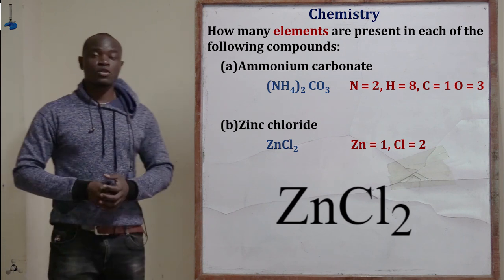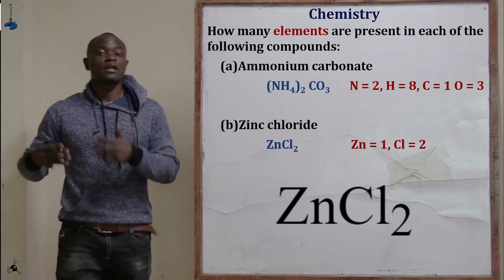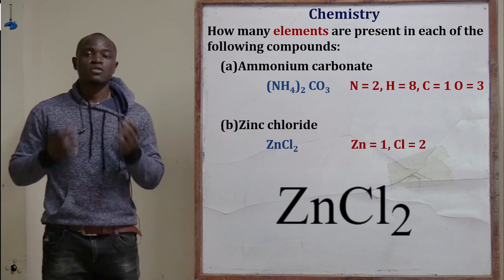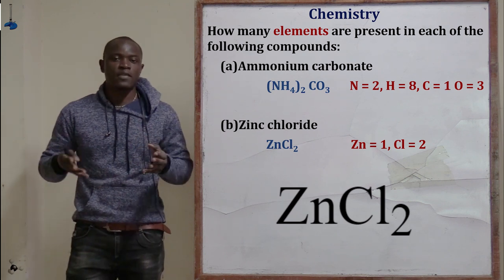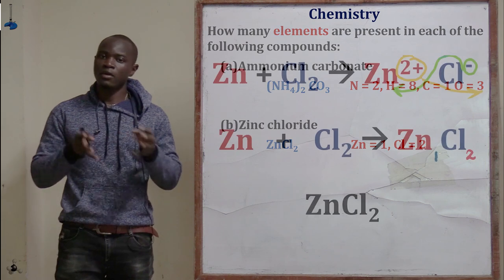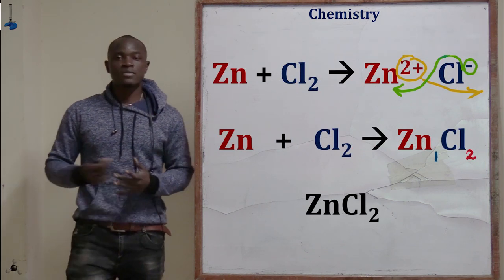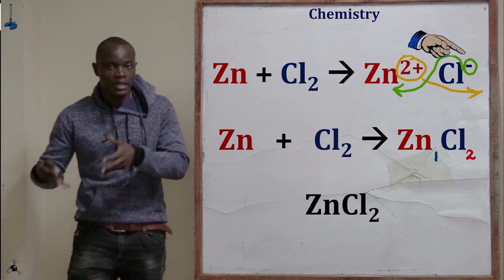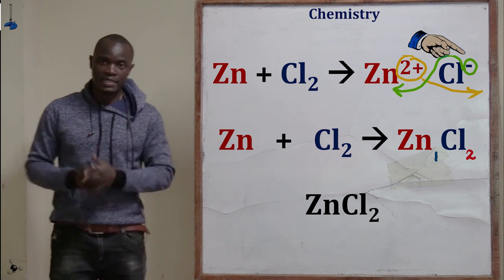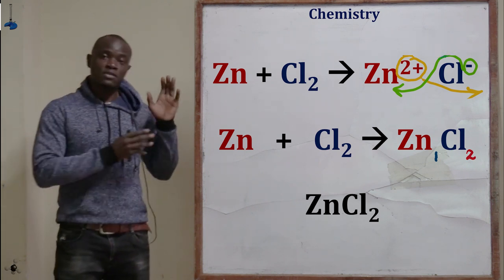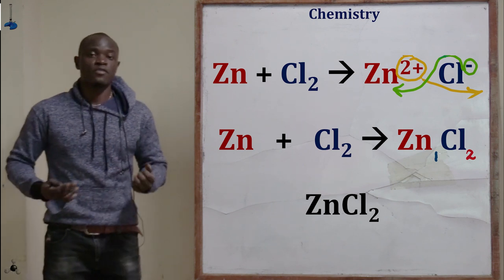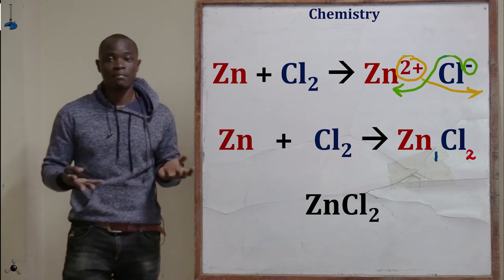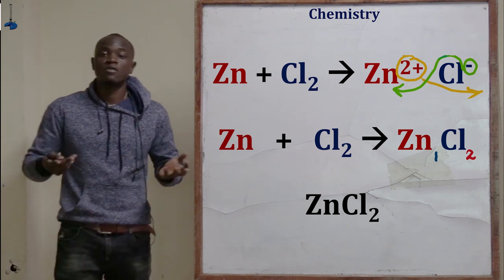The next compound is zinc chloride. How many elements are present in zinc chloride? We must first identify the valencies: zinc has a valency of 2 positive, and chloride from chlorine has a valency of 1 negative. Knowing these valencies allows us to write the chemical formula for zinc chloride.